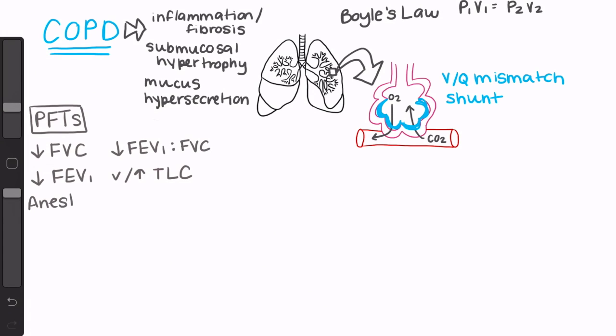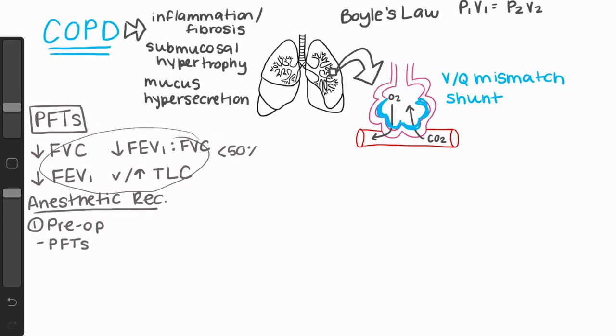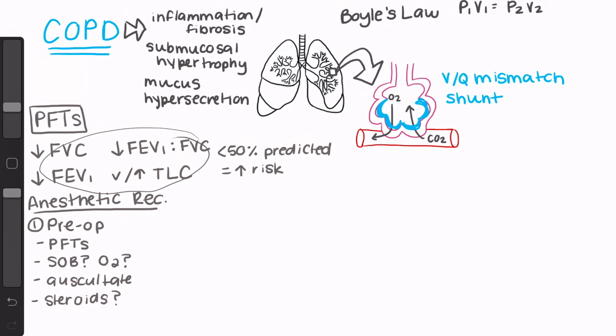Here are some recommendations and things to think about when providing anesthesia for a patient with COPD. First, make sure you're doing a thorough pre-op assessment. It can be very helpful to check out your patient's PFTs if they're available. Patients with values of less than 50% of the predicted volumes typically demonstrate dyspnea with exertion and may be at an increased risk for the need of post-op ventilation. Ask them about shortness of breath with activity and if they require oxygen at home. Auscultate for wheezes and consider pre-treatment with an inhaled beta-2 agonist if they're present. Assess if the patient has had a COPD exacerbation requiring long-acting steroids in the past six months, as this could result in hypothalamic pituitary adrenal axis suppression and warrants consideration for stress-dose steroids.